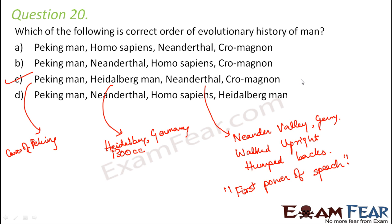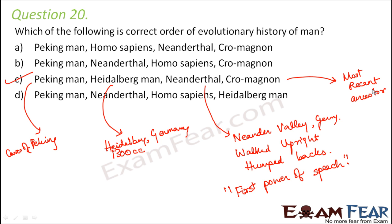Finally, the Cro-Magnon man is the most recent ancestor of today's man. They were well developed, their jaws did not project forward, and the brain capacity of Cro-Magnon man was approximately 1650 cc. So in order: Peking man, then Heidelberg man, then Neanderthal, and finally Cro-Magnon.